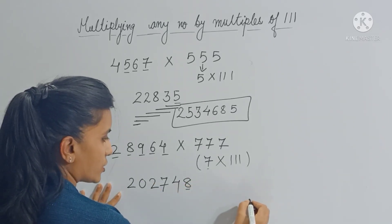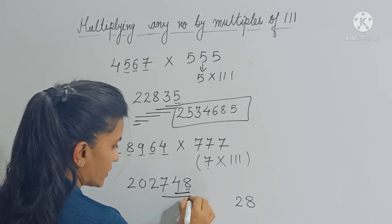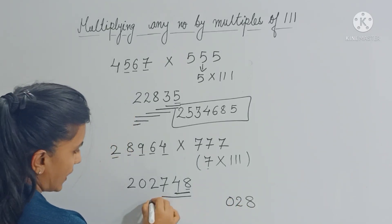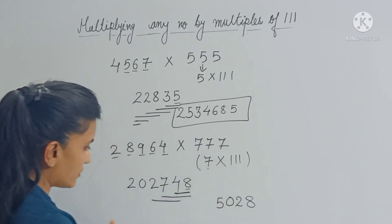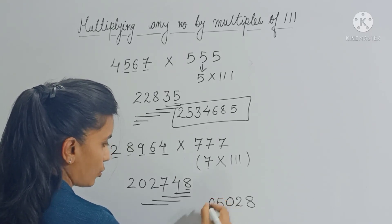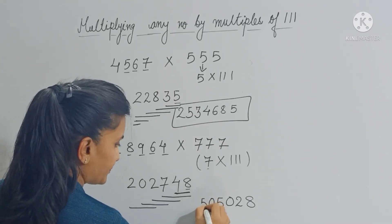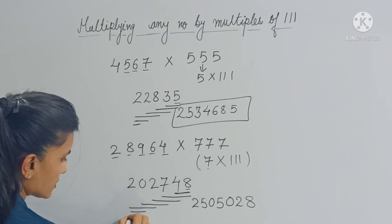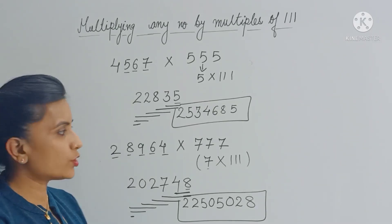Now let's multiply the result by 111 using the trick. Copy the first digit as it is. Add these two digits — you get 12, carry 1. Add these three digits — you get 19, plus 1 carry = 20, carry 2. Add these three digits — you get 9, plus 1 carry = 10, carry 1. Add these three digits — you get 4, plus 1 carry = 5. Start reducing: add 2 and 0 to get 2. The last digit is 2. This is your final answer.